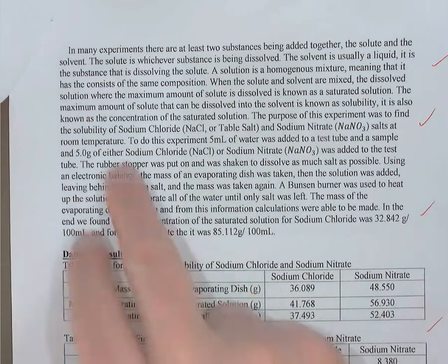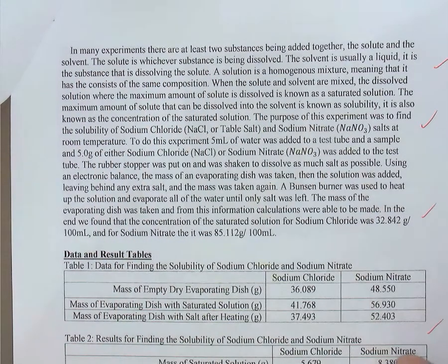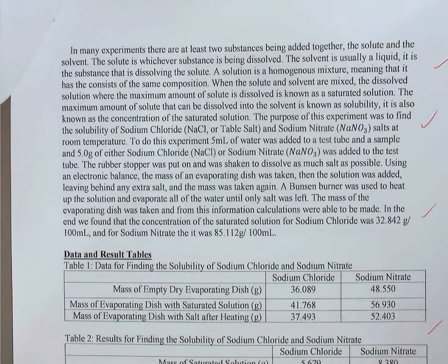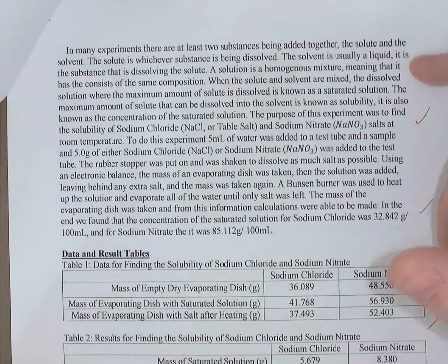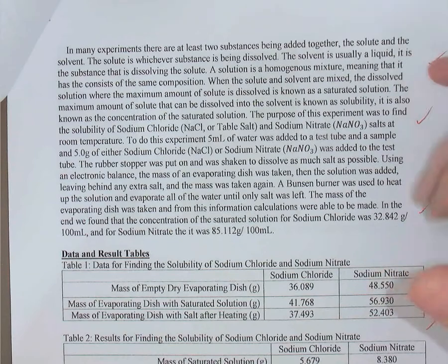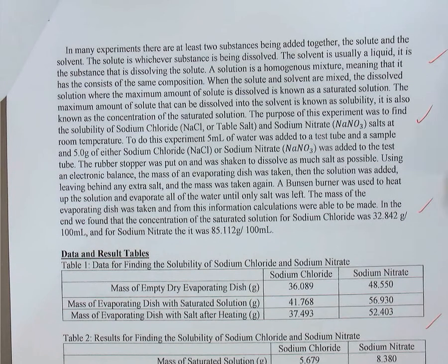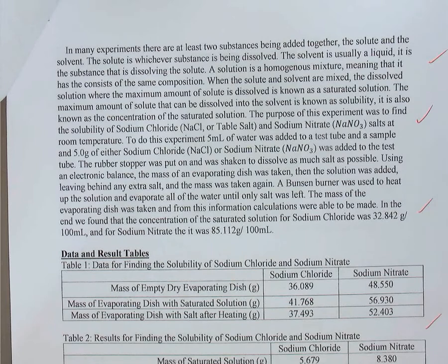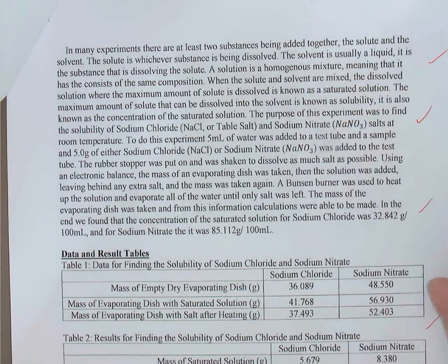For example: 'In many experiments there are at least two substances being added together — solute and solvent. The solute is whichever substance is being dissolved.' This student goes through definitions related to making solutions, since this experiment is on concentration of saturated solutions. So she's giving background information about solutions.